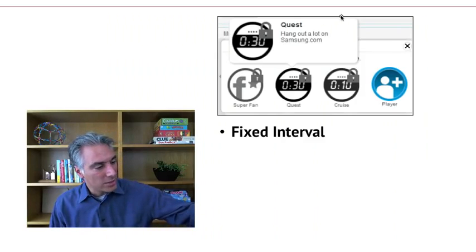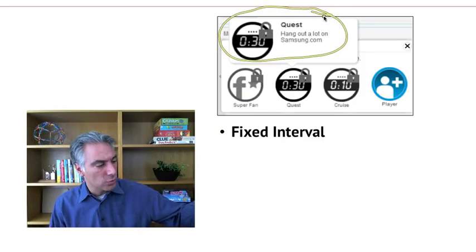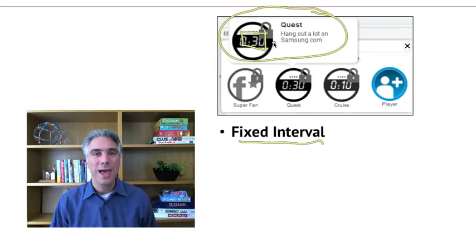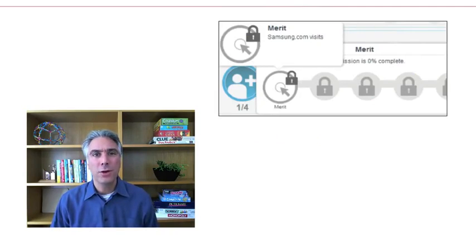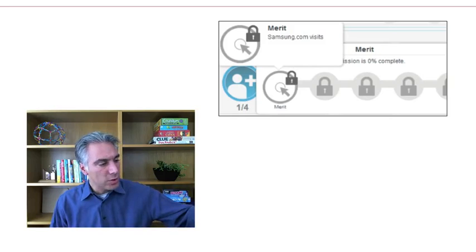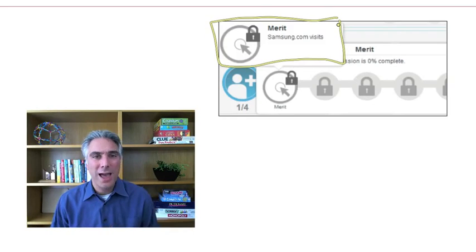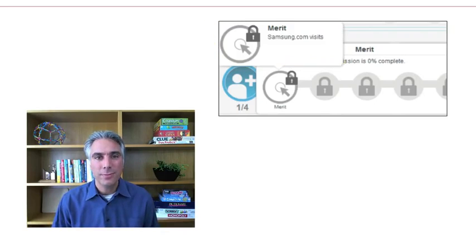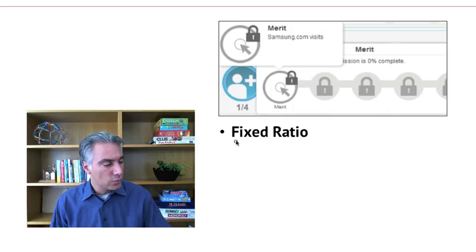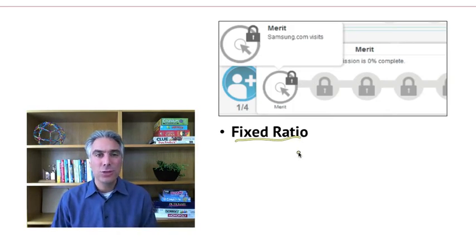Let's look at some examples of gamification rewards and how they fit this structure. The Samsung Nation Hangout Quest — a completion contingent expected reward — is also a fixed interval reward because it's about a certain amount of time that has to pass before you get the reward. Another Samsung Nation quest is based not on time but on the number of visits you make to the site; you have to visit so many times to unlock the badge. That badge is a fixed ratio reward.